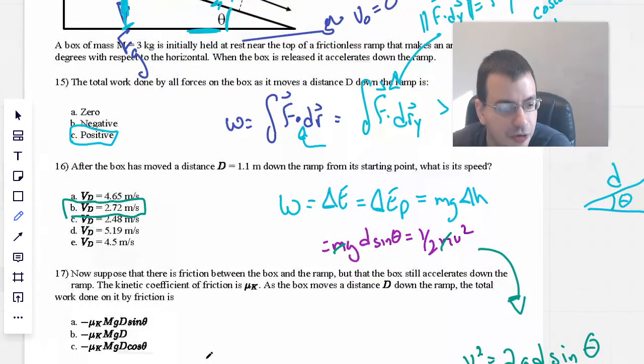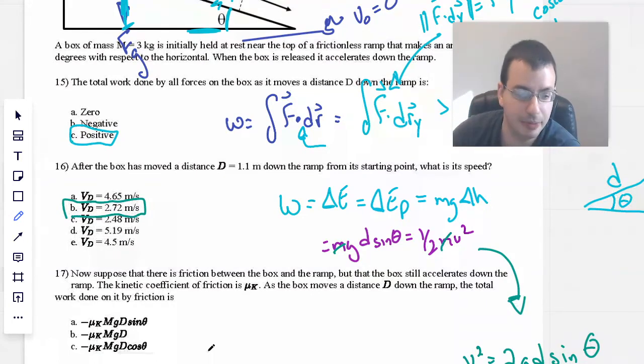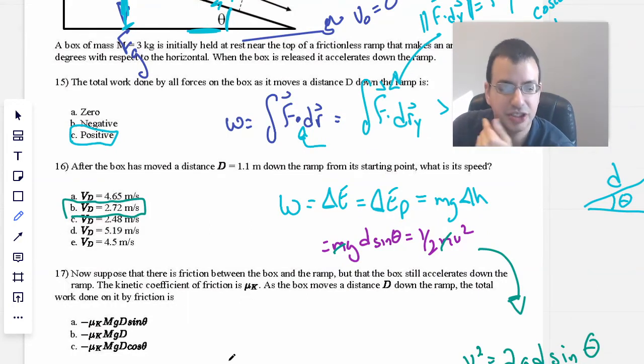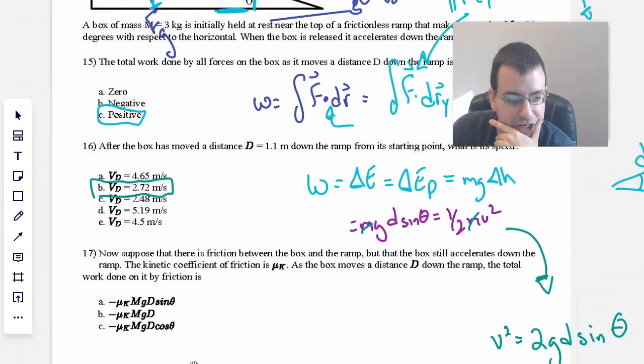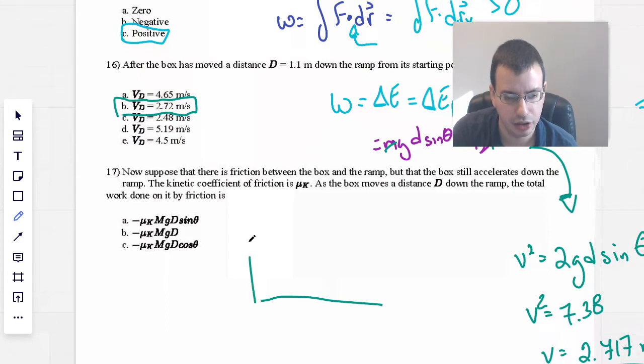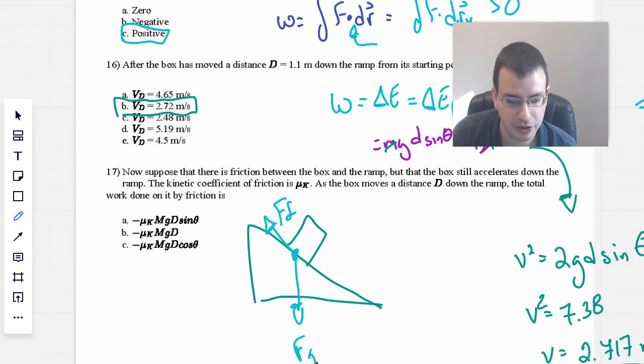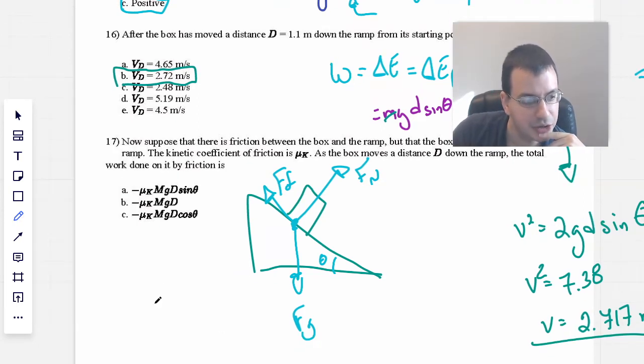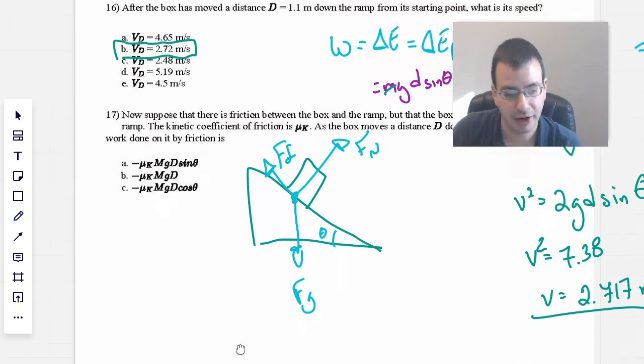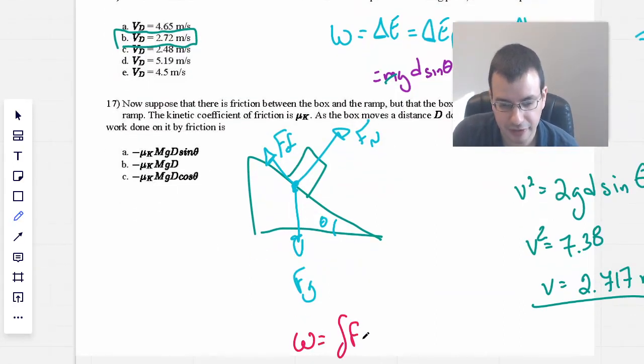Now suppose that there is friction between the box and the ramp, but the box still accelerates down the ramp. The kinetic coefficient of friction is mu k. As the box moves the distance d down the ramp, total work done by friction is. So this is almost a completely unrelated question. We have a box like so going down a ramp, we have force friction going this way, force gravity going this way, theta, and force normal keeping the box from falling through the ramp.